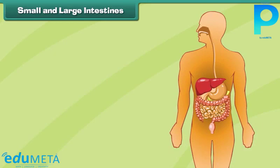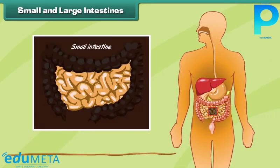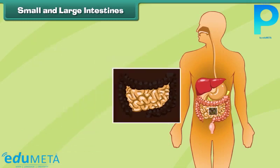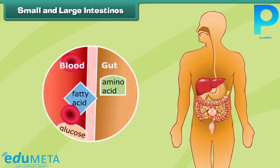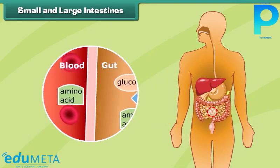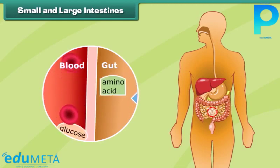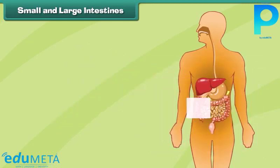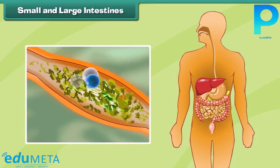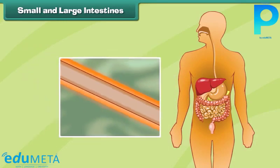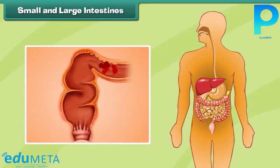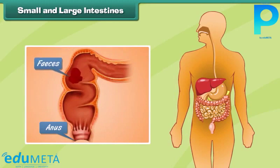The intestines are long tubes where the final breakdown and absorption of food occurs. The small intestine is a long coiled tube where digested food is broken down completely and absorbed into the blood. The large intestine absorbs water from the undigested food and passes the waste food out from the body as feces.